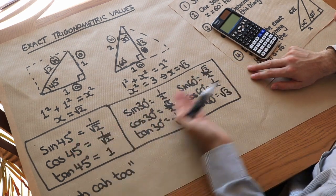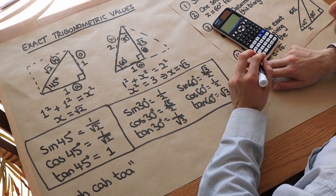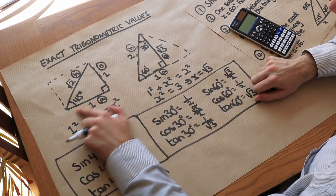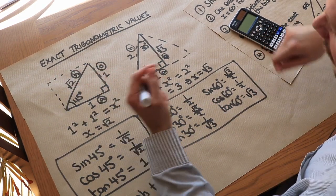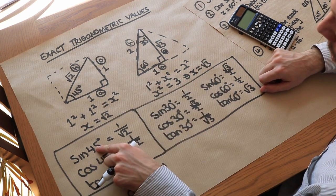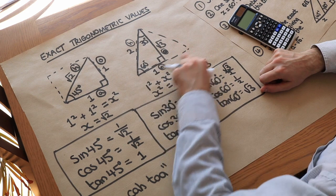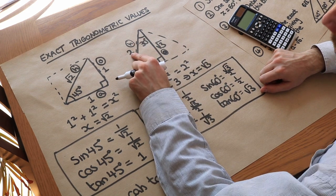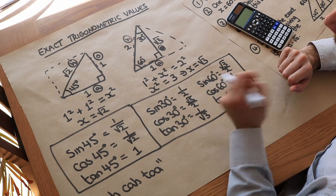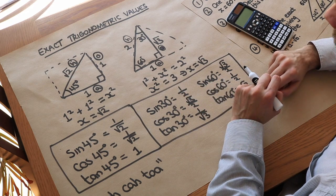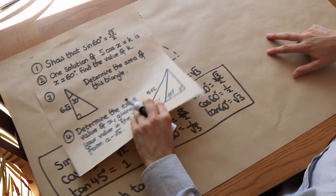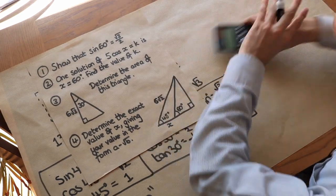That gives us all our exact trigonometric values. You could memorize these, but the key is just to draw a unit square and cut it diagonally for 45 degrees, or take an equilateral triangle of side 2 and cut it in half for 30 and 60 degrees. This allows us to work out trigonometric problems without a calculator.